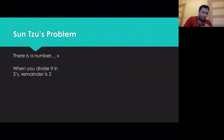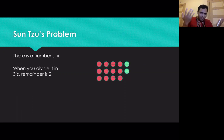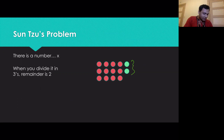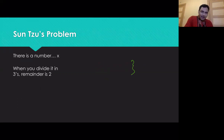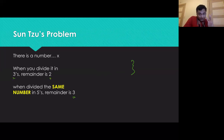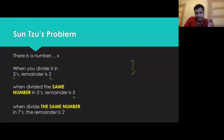Let's talk about Sun Tzu's problem. You start with a number X. When you divide X by three, the remainder is two. You can think of this in terms of pictures — imagine you have that many balls, and if you split them into columns of three, two balls are left over. Similarly, divide the same number X by five and the remainder is three, and divide by seven and the remainder is two.